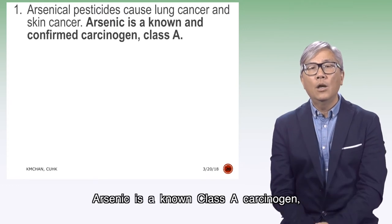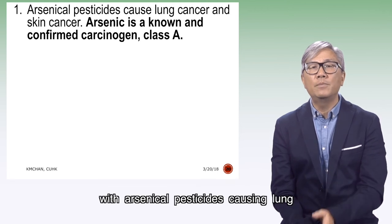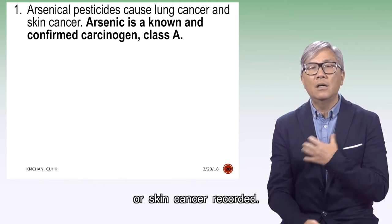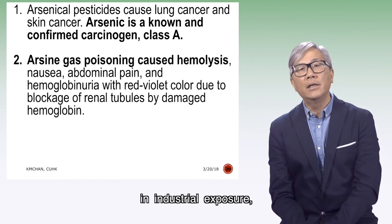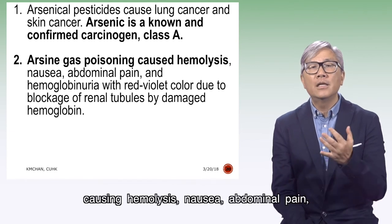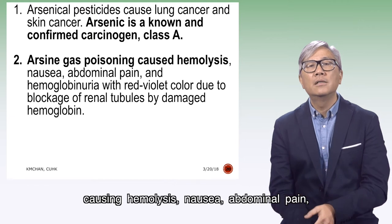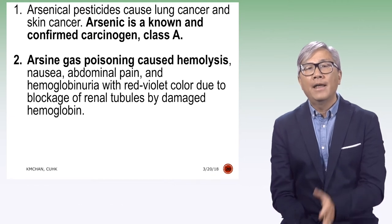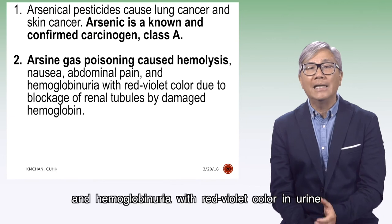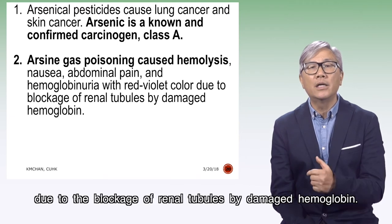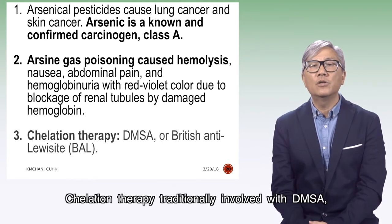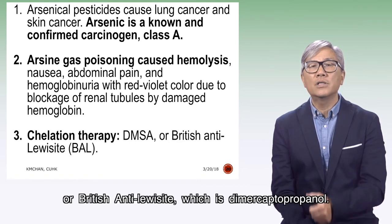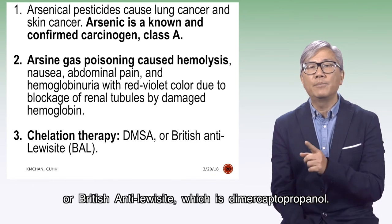Arsenate is a lung class A carcinogen, with arsenic pesticides causing lung or skin cancer recorded. Zinc gas poisoning is also not uncommon in industrial exposure, causing hemolysis, nausea, abdominal pain, and hemoglobinuria with red-violet color in urine due to the blockage of renal tubules by damaged hemoglobin. Chelation therapy traditionally involves DMSA (dimercaptosuccinic acid) or British Anti-Lewisite (BAL), which is dimercaptopropanol.